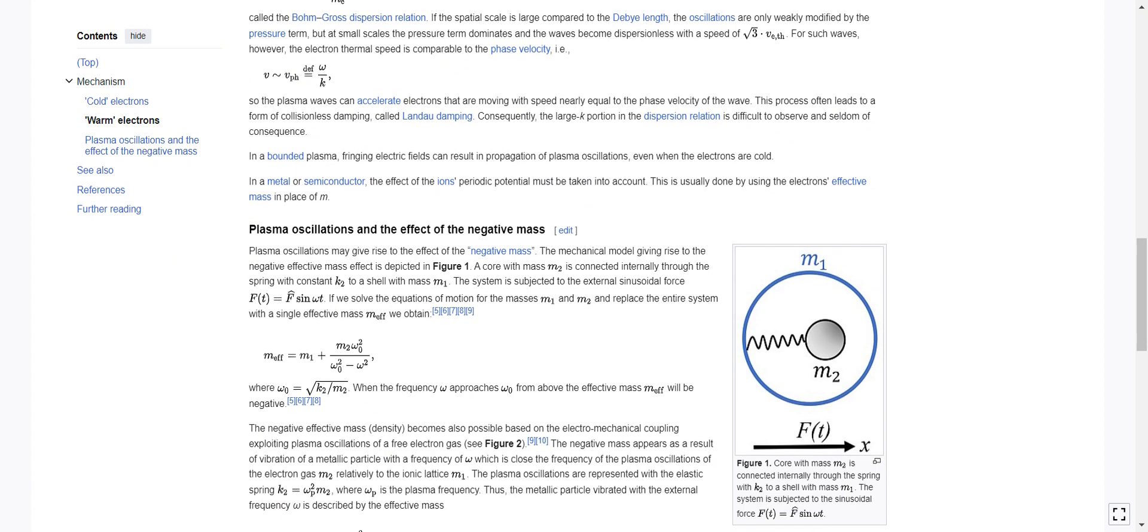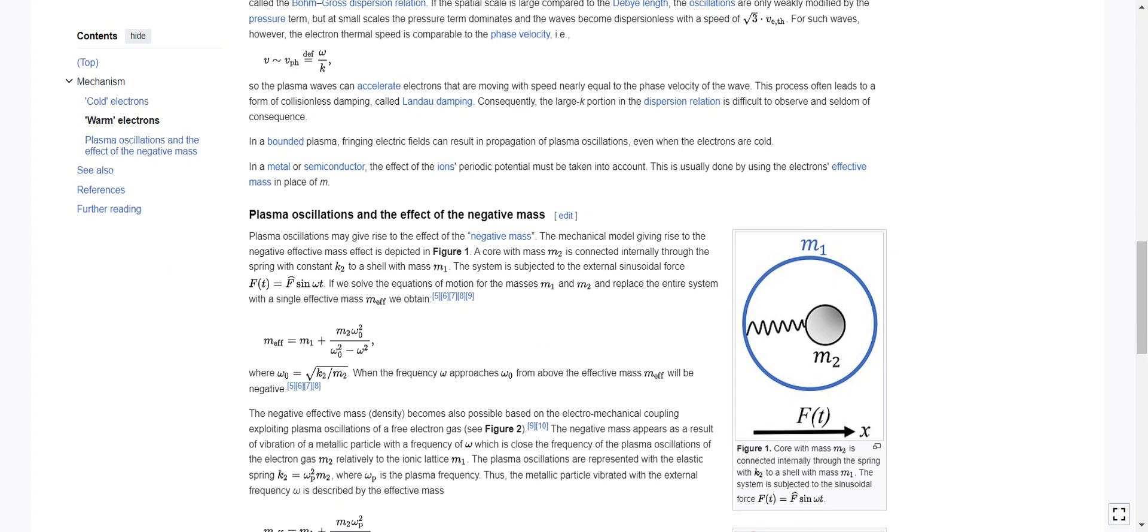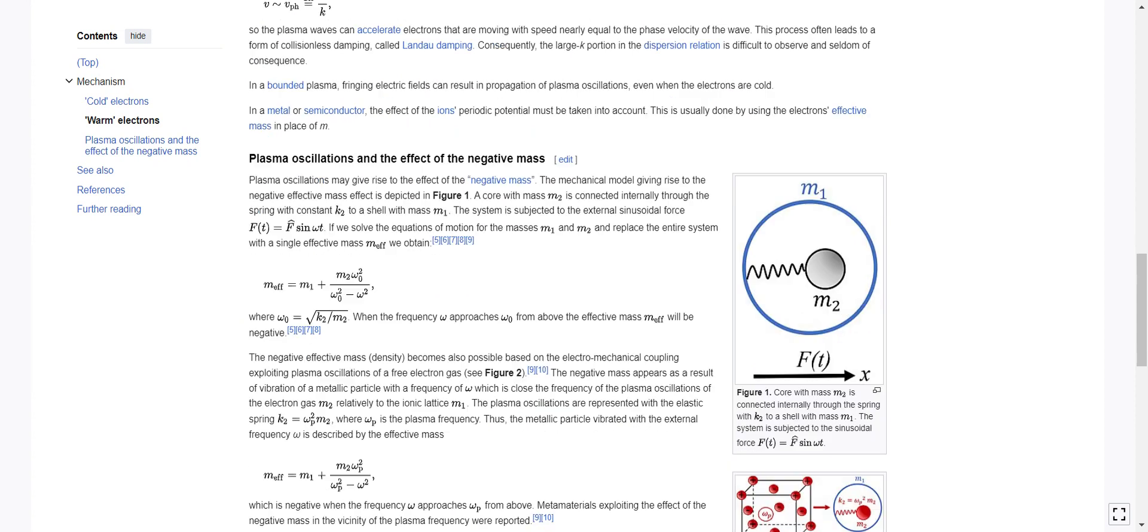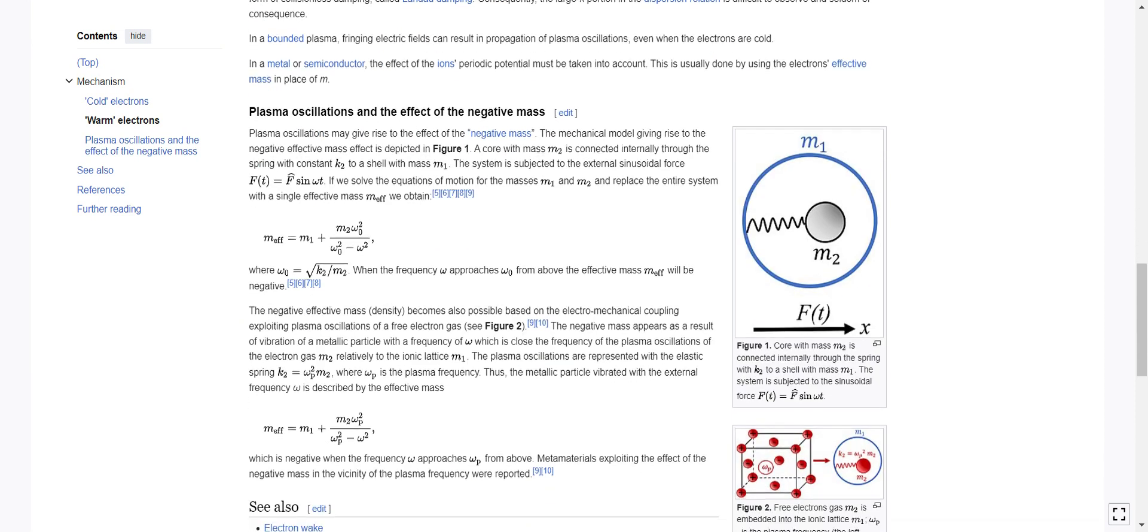In a bounded plasma, fringing electric fields can result in propagation of plasma oscillations even when the electrons are cold. In a metal or semiconductor, the effect of the ion's periodic potential must be taken into account. This is usually done by using the electron's effective mass in place of m.